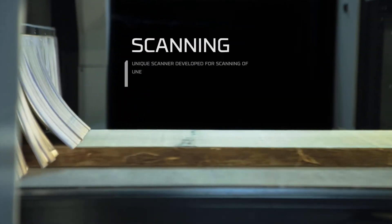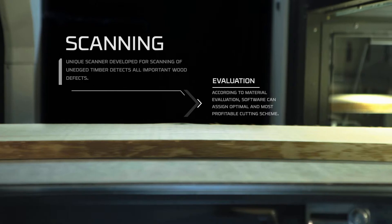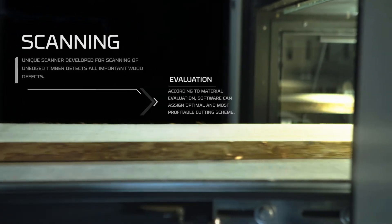A unique scanner uncovers wood defects such as different types of knots, cracks, pith, sap, insect deterioration, rot, and bark.